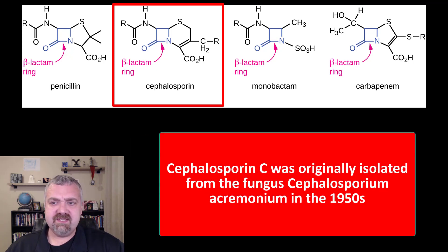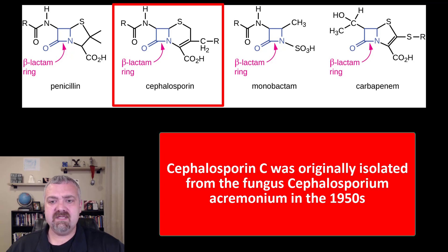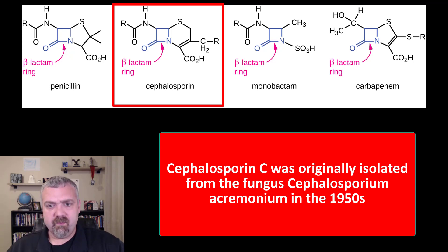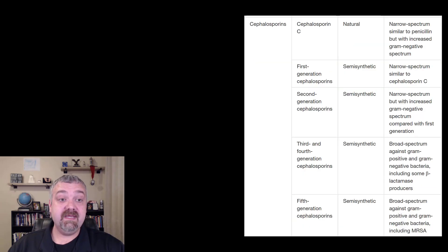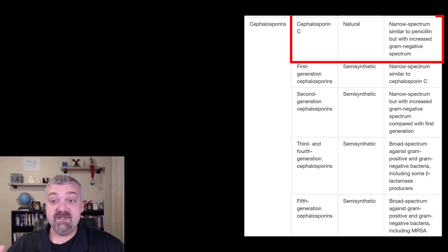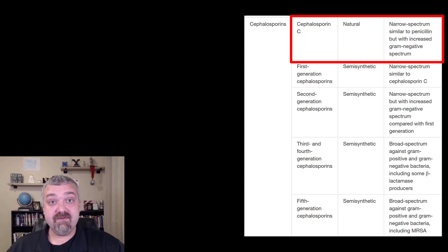Just a quick history: they found it in the 50s from Cephalosporium acremonium — I believe that's the fungus — where they first isolated it. And that would be cephalosporin C, the actual natural cephalosporin.